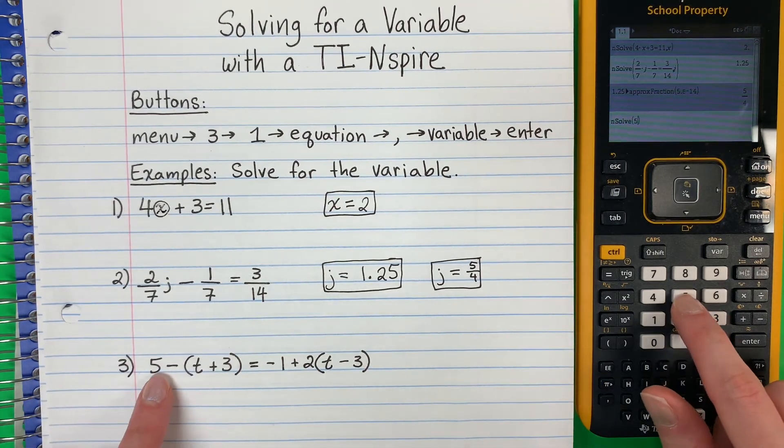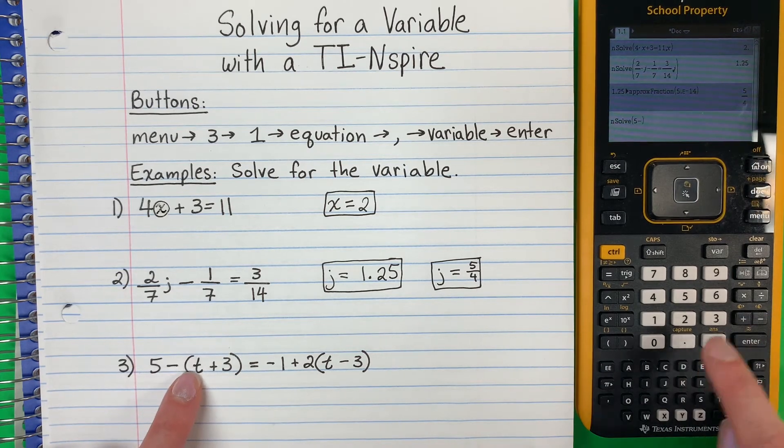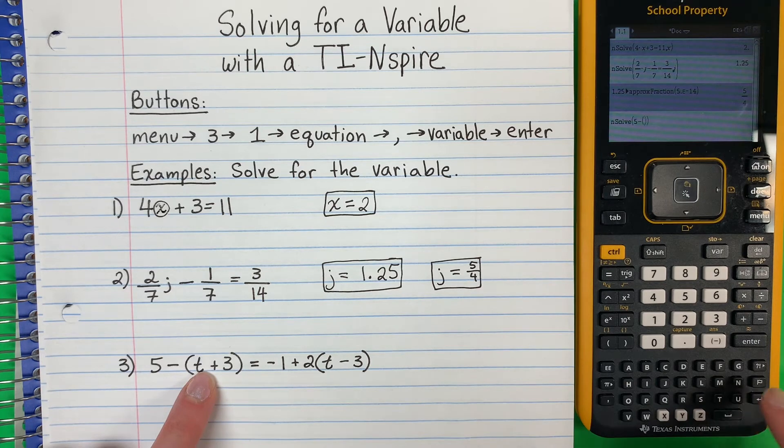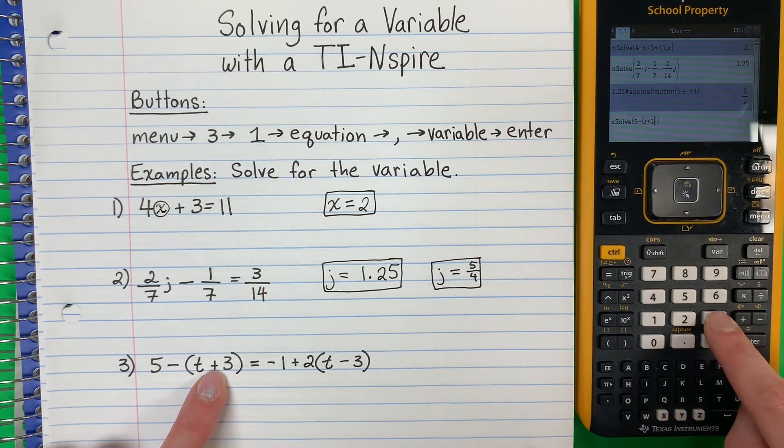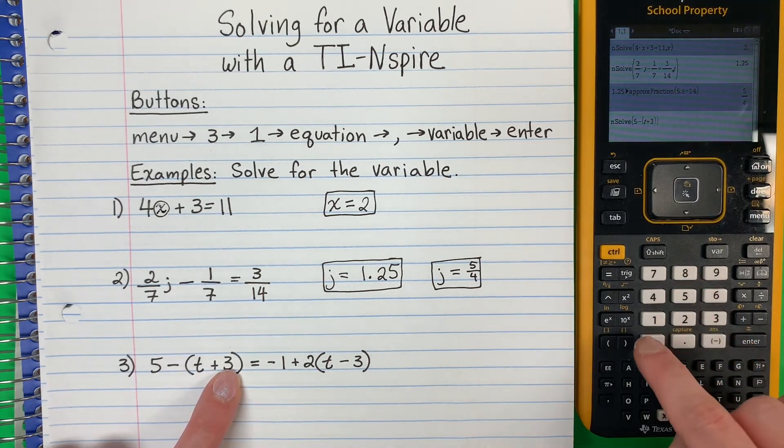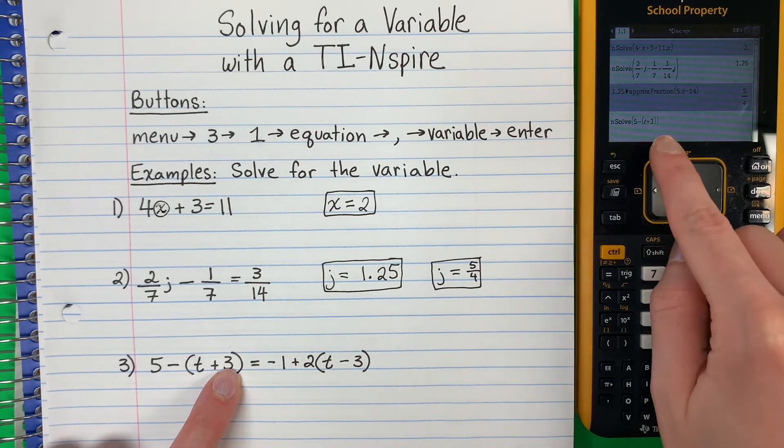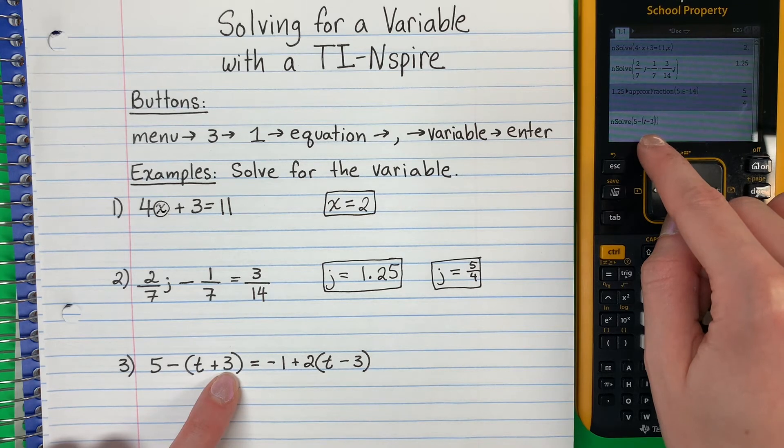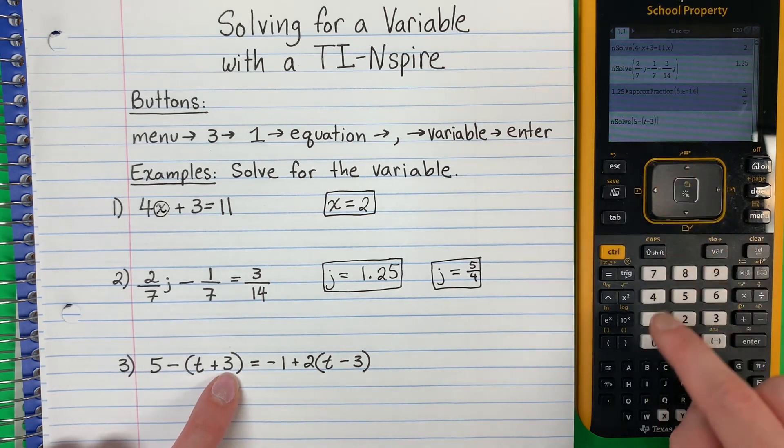So I'm going to put 5 minus open parenthesis. Abre parenthesis. T plus 3. Close. Cierra otra vez. You need to close it. I know there's already some, but you close it anyway. Yo sé que ya hay paréntesis, pero no me importa. Pone un cierra paréntesis otra vez. So go ahead and close it.